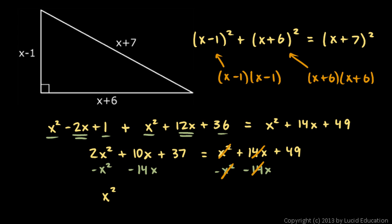And those cancel out on the right. And then on the left I'm left with 10x minus 14x, which is minus 4x. And I'm also going to subtract 49 on each side. And on the right, everything has now canceled out. And on the left I have 37 minus 49, which is negative 12. And on the right side I just have 0. And that's what I wanted. I wanted all my terms on one side equal to 0.